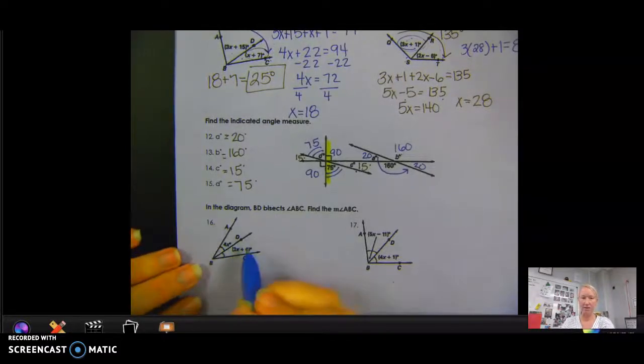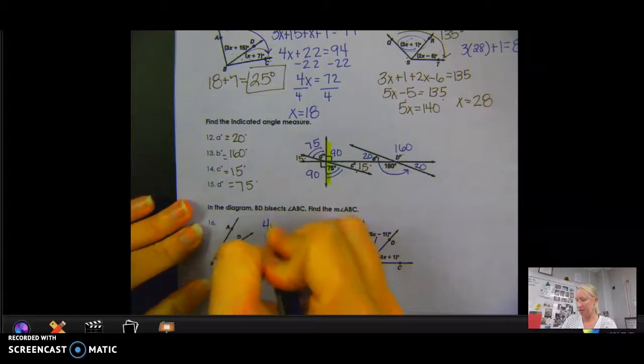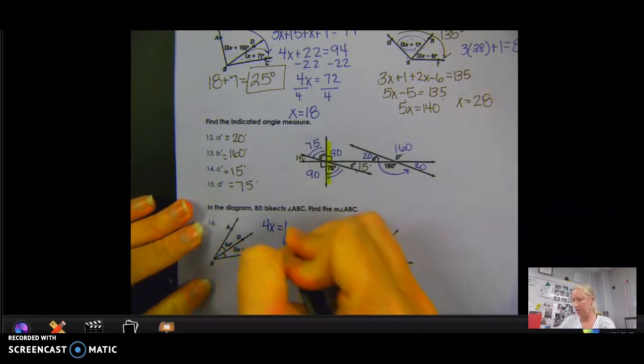Okay, let's finish up on these two problems. Hopefully you did these on your own. So they bisect each other. To solve for x, I'm going to set the two angles equal to each other because their measurements are going to be equal.